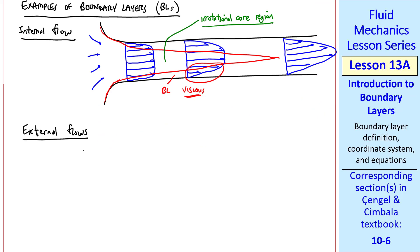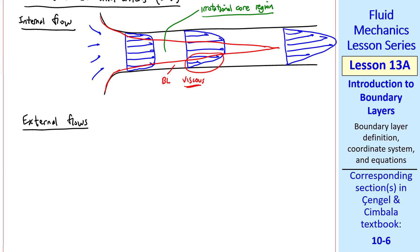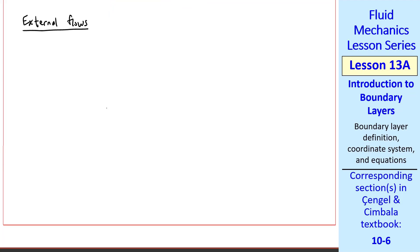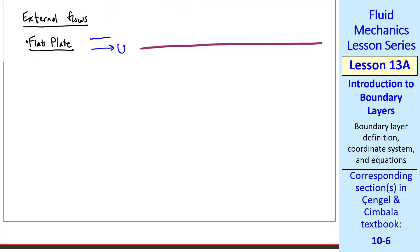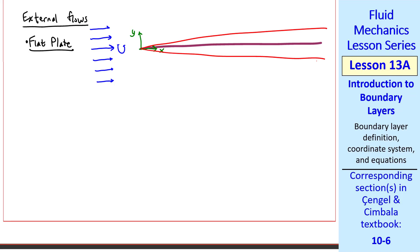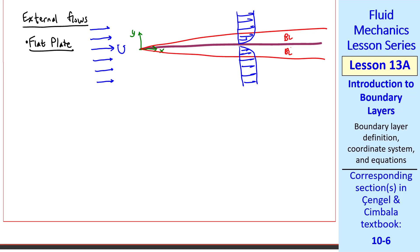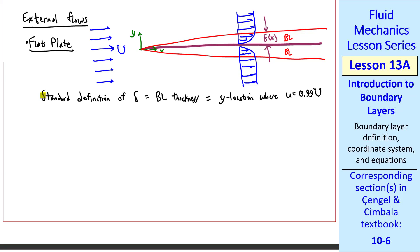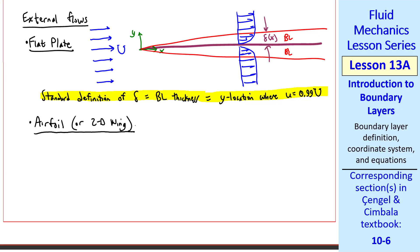We can also have boundary layers in external flows — in fact, this is even more common. I'll show two examples. First, I'll discuss a flat plate. Imagine a very thin flat plate in a free stream of uniform speed capital U. We'll let x be along the plate and y normal to the plate. A thin boundary layer develops on both sides of the plate. We'll call the thickness of the boundary layer delta, and it's a function of x — you can see that delta grows with x. The standard definition of delta, the boundary layer thickness, is the y location where u equals 99% of capital U.